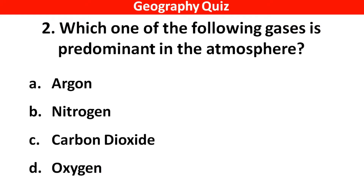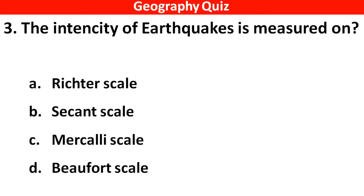Which one of the following gases predominates in the atmosphere? Right answer is option B — Nitrogen.